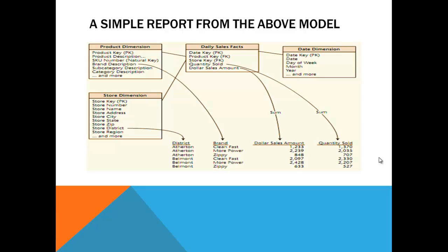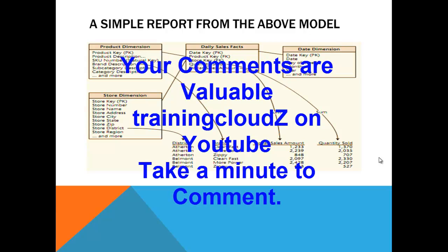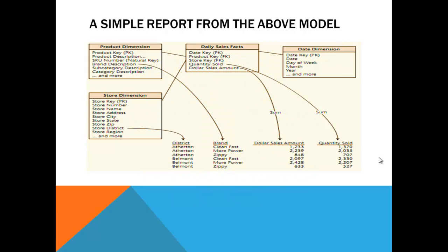Okay. Star schema is a multi-dimensional, perfectly multi-dimensional, which is denormalized structure. Snowflake schema is a normalized structure when compared to the star schema. So all you are trying to do, again, trying to avoid the key dependencies. You are at least going to first normal form or second.